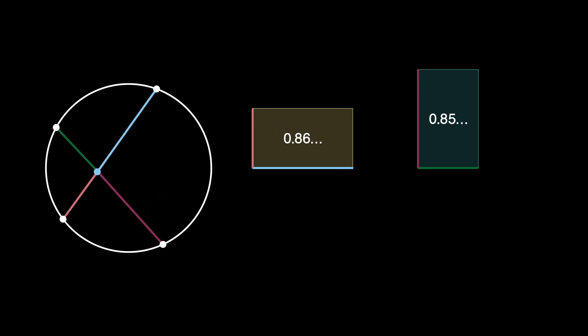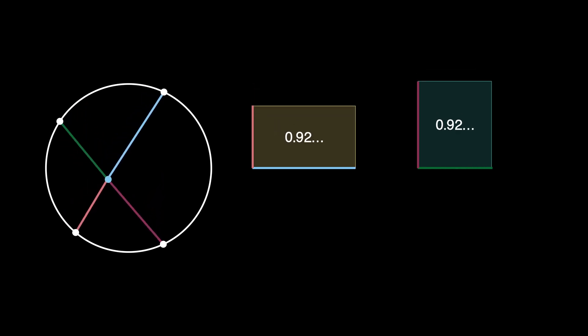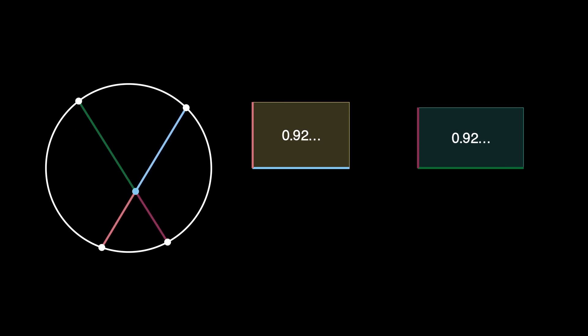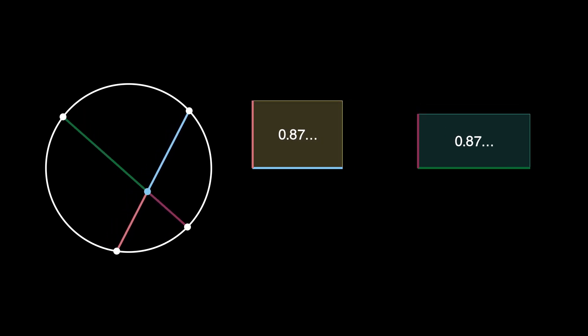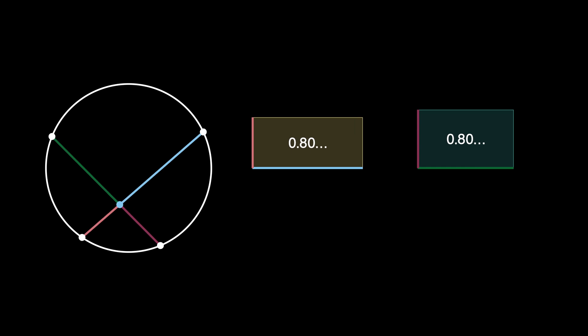It turns out that no matter how you draw the chords, as long as they intersect, the areas of these two rectangles will be exactly the same as pictured here.